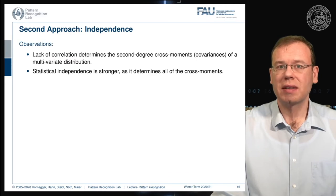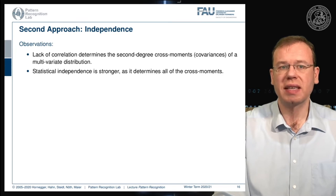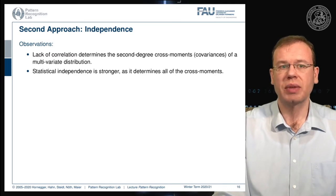Building on previous ideas, using the whitening transform we were able to uncorrelate the signals. But correlation is only determined by the second-degree cross moments — the covariances of a multivariate distribution. Statistical independence is a much stronger statement than correlation, as it determines all of the cross moments.